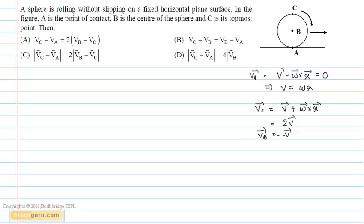Now we will solve each and every option. Vc vector minus Va vector equals minus 2 times Vb vector minus Vc vector. Therefore, option A is incorrect.